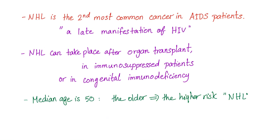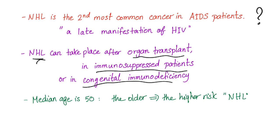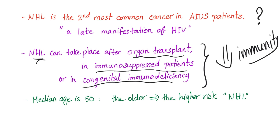Non-Hodgkin's lymphoma is a late manifestation of HIV-AIDS. It's the second most common cancer in AIDS patients. Non-Hodgkin's lymphoma can also take place after organ transplant, in immunosuppressed patients, as well as in congenital immunodeficiency. What's common in all of this? Decreased immunity — because when your immunity is bad, bad things happen, including lymphoma.